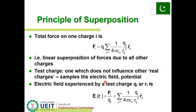A test charge is one which does not influence other real charges and samples the electric field potential. The electric field experienced by a test charge q_i at position r_i equals E_i(r_i) equals F_i over q_i, which equals the summation (j not equal to i) of 1 over 4 pi epsilon times q_j over r_ij squared times r_ij hat.